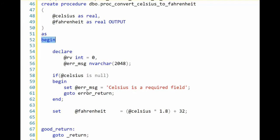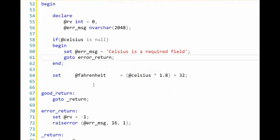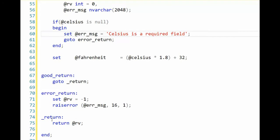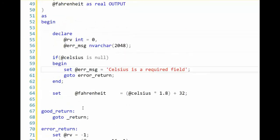And notice there I say set RV equals negative one. Notice that I initialized RV to be zero here, hoping that I will always have success. But as you can imagine, things happen. And then error message is sent with Celsius is a required field. It goes to error, and then it falls through to this RV.